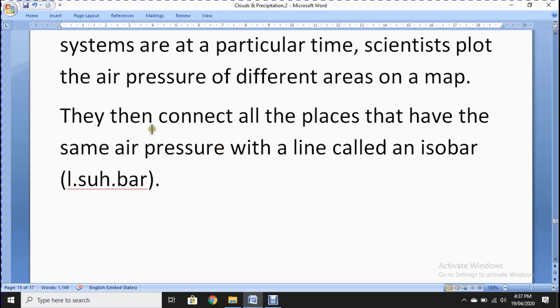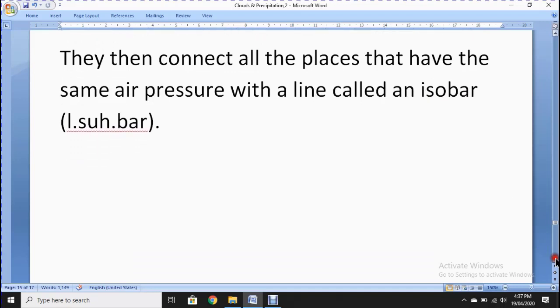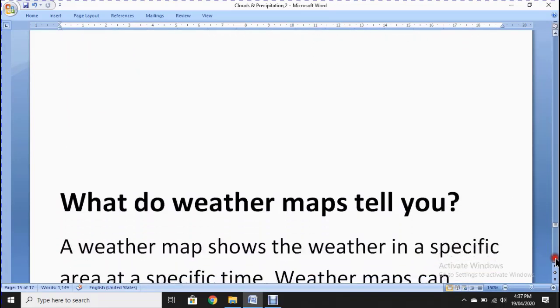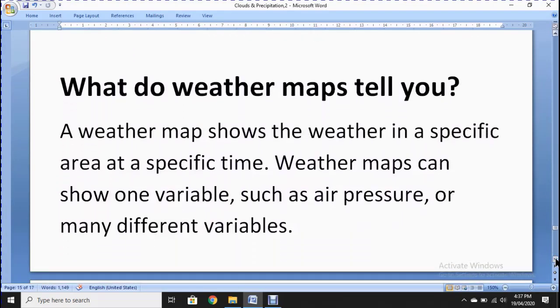They make a graph and plot the areas where they have high and low pressure systems. They then connect all the places that have the same air pressure with a line. This line is known as or called an isobar. So this line where they mention on the map where the pressure will be low or high that helps us.